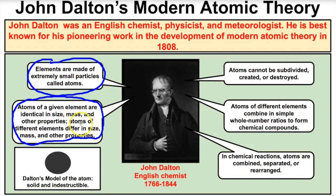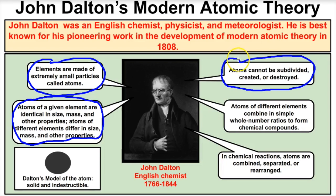We talked about isotopes in a different video — you can click the card in the top right-hand corner to go to that video. Thirdly, John Dalton's atomic theory in 1808 stated that atoms cannot be subdivided, created, or destroyed. Today we know this is not true — in fact, we proved this in 1945 over Hiroshima and Nagasaki when we dropped two atomic bombs on those two cities in Japan. Atoms can be subdivided, and we can also synthesize them in labs today.